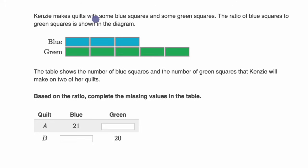We're told Kenzie makes quilts with some blue squares and some green squares. The ratio of blue squares to green squares is shown in the diagram. The table shows the number of blue squares and the number of green squares that Kenzie will make on two of her quilts.